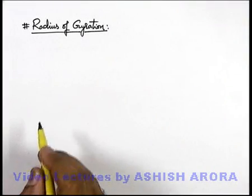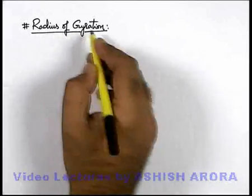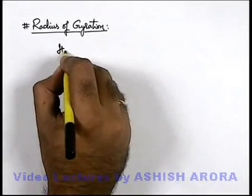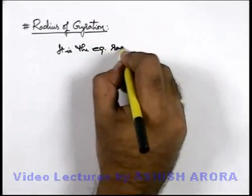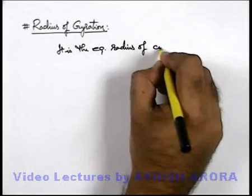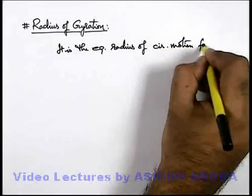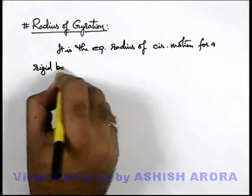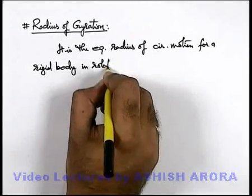Let's discuss radius of gyration. We can simply write about radius of gyration as: it is the equivalent radius of circular motion for a rigid body in rotation.